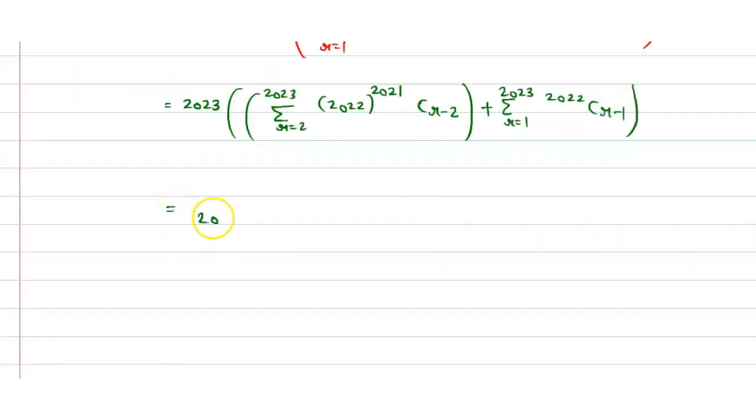Now, how we will solve it? See, again it can be written as 2023 times 2022 times whole power, sorry. It can be written as equal to 2 to the power 2021 plus 2 to the power 2022.